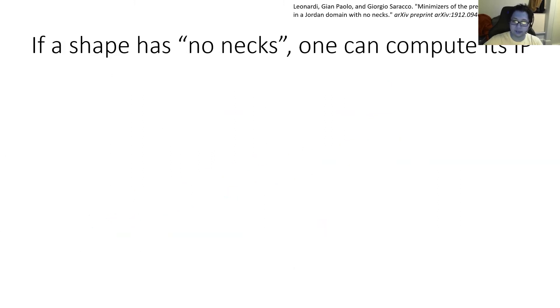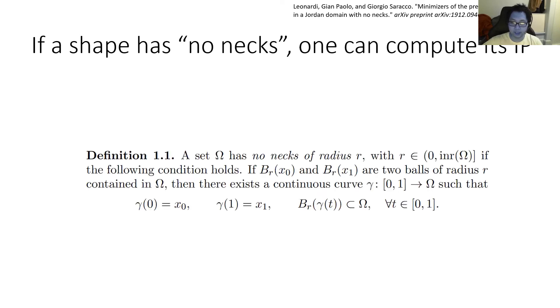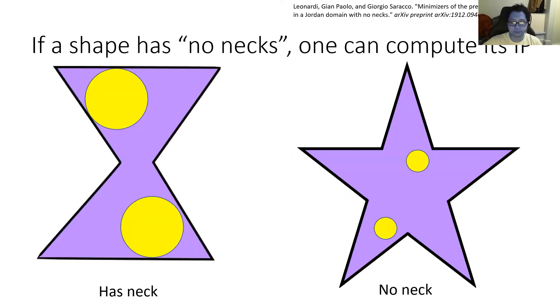If we focus our attention, however, on a specific class of domains, those with no necks, then it is possible to compute the exact isoperimetric profile. A domain has no necks of radius r if for any two balls of the same radius inside the domain, there exists a path by which you can move one ball to the other. Put more visually, consider the following shapes. The hourglass on the left, which has a neck, and the star on the right, with no neck. On the hourglass, there is no way to move the two balls to each other, so it has a neck. On the star, any two balls at the same radius can be moved to each other, so it has no neck.